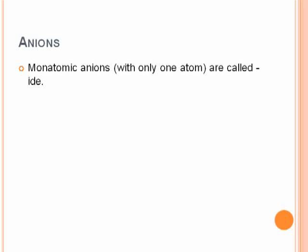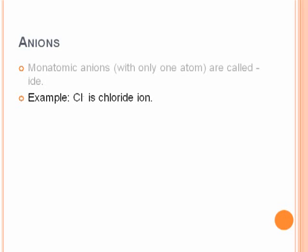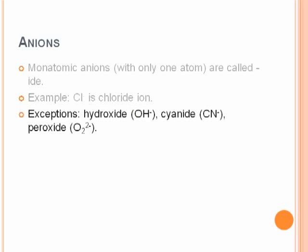Now for anions, your monoatomic anions, that is containing only one atom, get the -ide ending. For example, chlorine would become chloride, so I changed that -ine ending to -ide. Similar things: oxygen to oxide, nitrogen to nitride, fluorine to fluoride. You can do it with just about any element that will form an anion. There are some exceptions. Hydroxide, cyanide, peroxide are all polyatomic but do end in -ide, so it's important to make note of that.